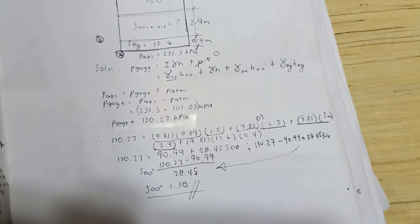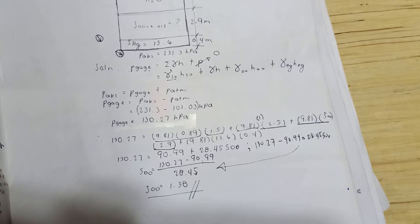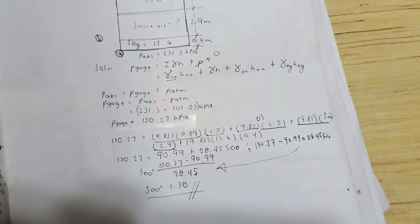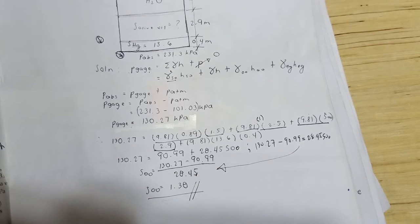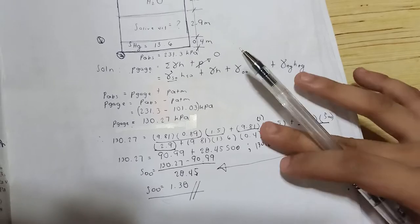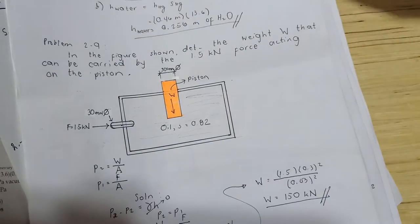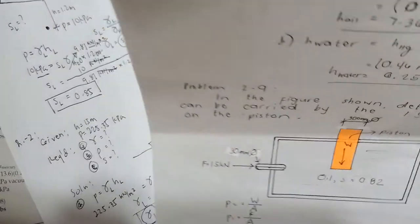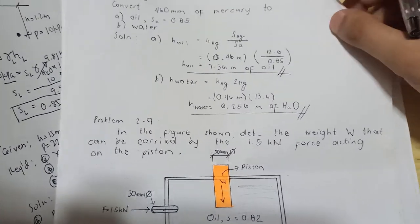Our specific gravity of olive oil is 1.38. Remember that once the specific gravity is determined, the problem is solved. Let's move on to the 8th problem.